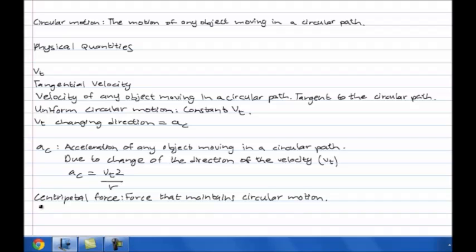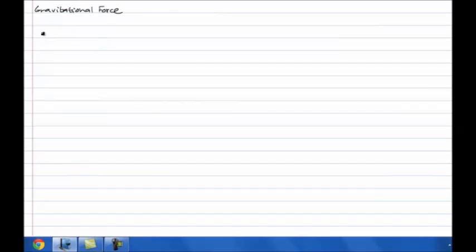It can be found by the formula Fc equals M times AC. And since AC equals Vt squared over R, we can replace the formula to get Fc equals M times Vt squared over R.